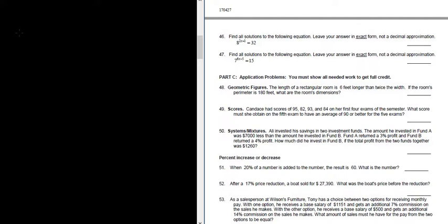Let's do number 48. The length of a rectangular room is 6 feet longer than twice the width. If the perimeter is 180, what are the dimensions?